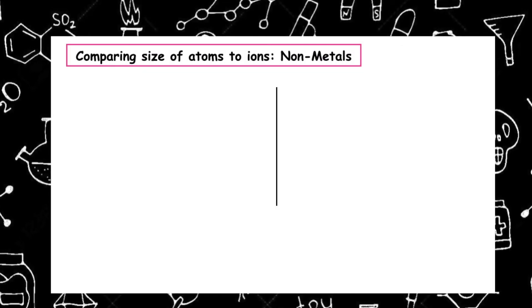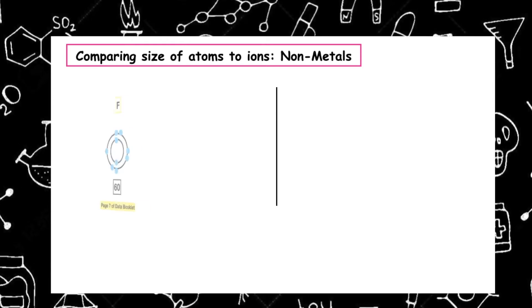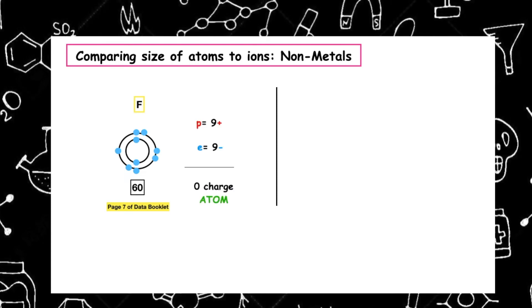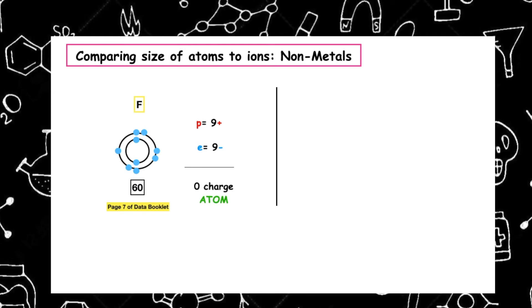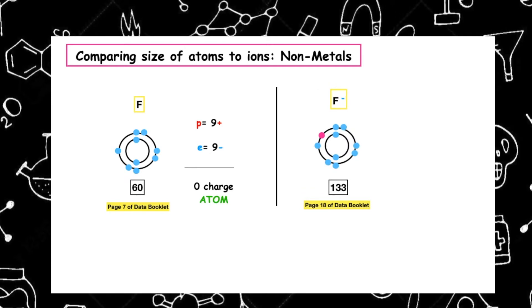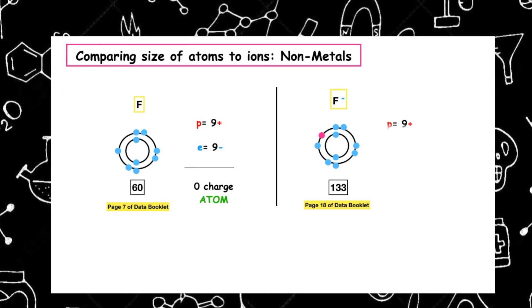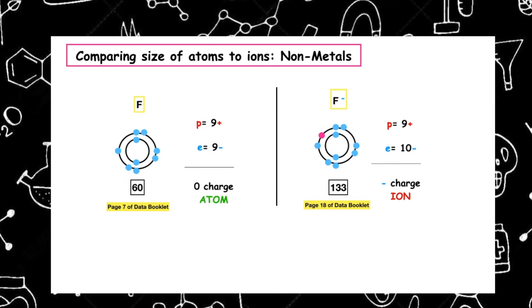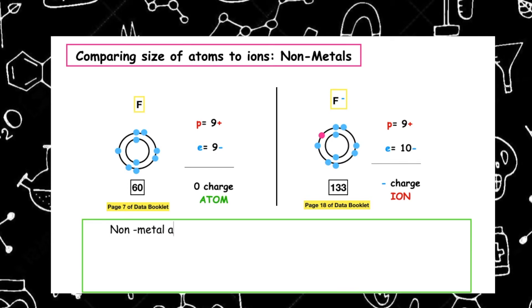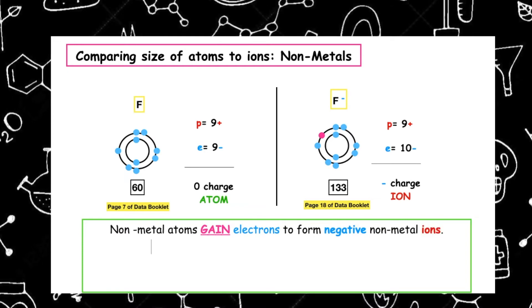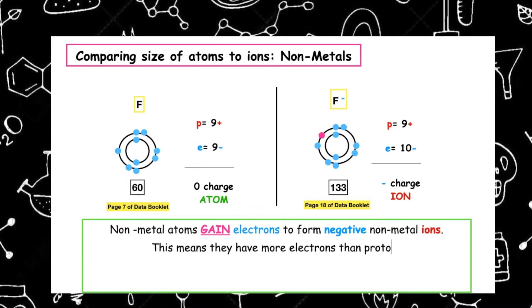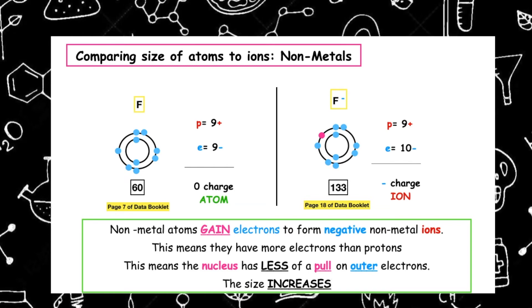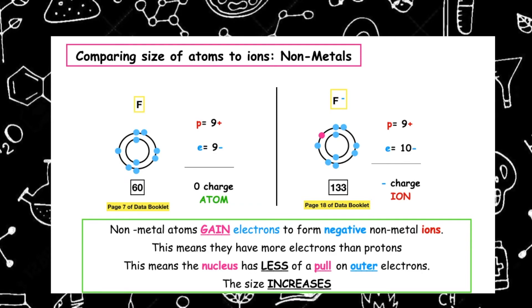Now let's compare the size of atoms to ions for non-metals. Fluorine, using page 7 of the data booklet, has an atomic radius of 60. As an atom it has equal numbers of protons and electrons, but as a non-metal it gains an electron to achieve stability, forming a negative ion with more electrons than protons. We can use page 18 of the data booklet to identify the radius of the fluoride ion. Because there are more electrons than protons, the nucleus has less of a pull on the electrons, so the size of the ion increases in comparison to the atom.